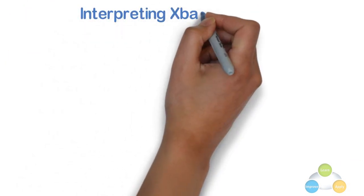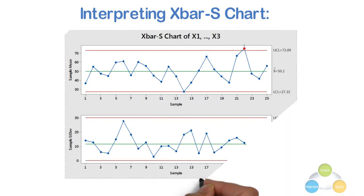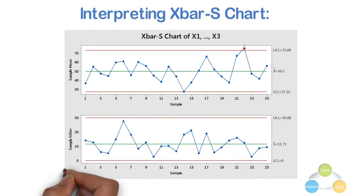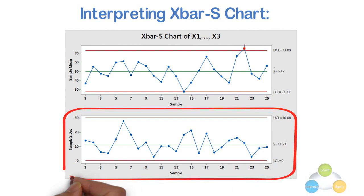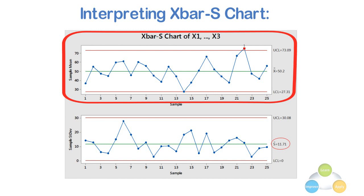Interpreting X bar S chart, i.e., X bar and standard deviation chart. In interpretation, like R chart in the X bar R chart, we have to look at S chart, i.e., standard deviation first to see whether the process variation is in control. And if process variation is in control, then we can look at the X bar chart as same is in the X bar R chart.